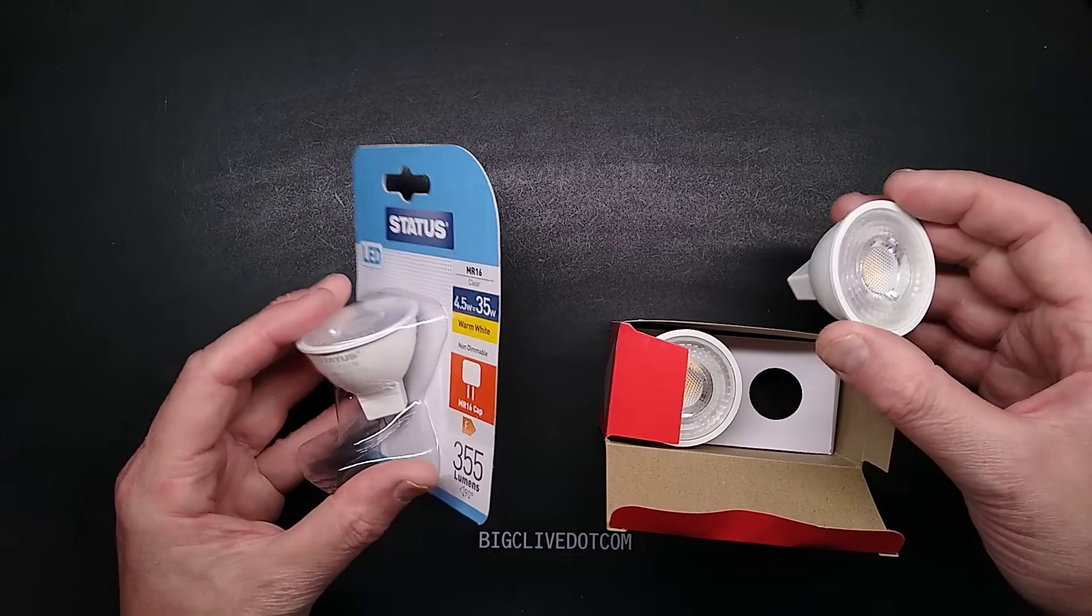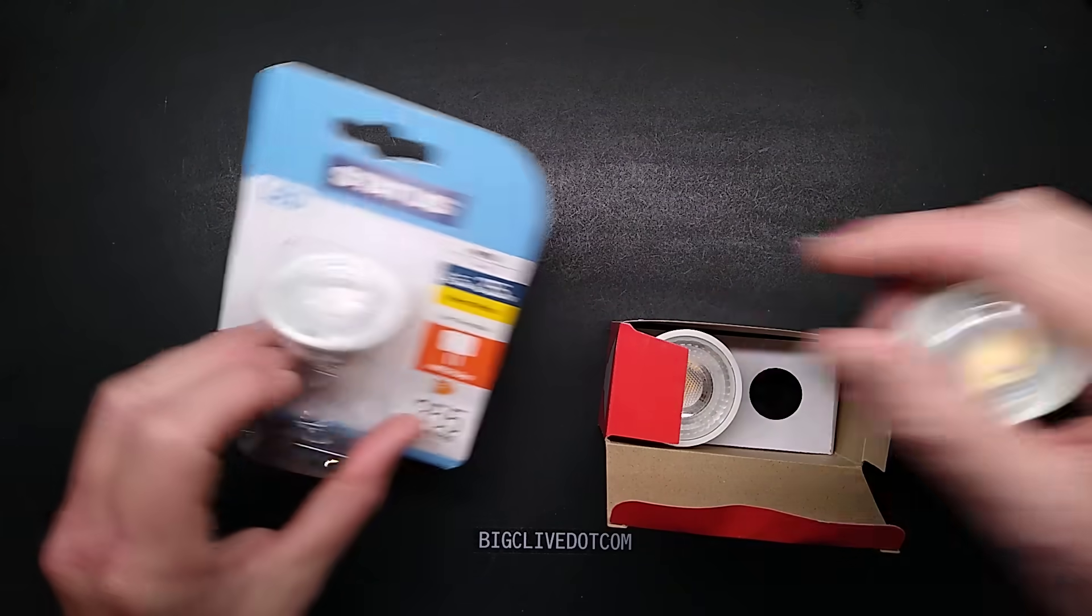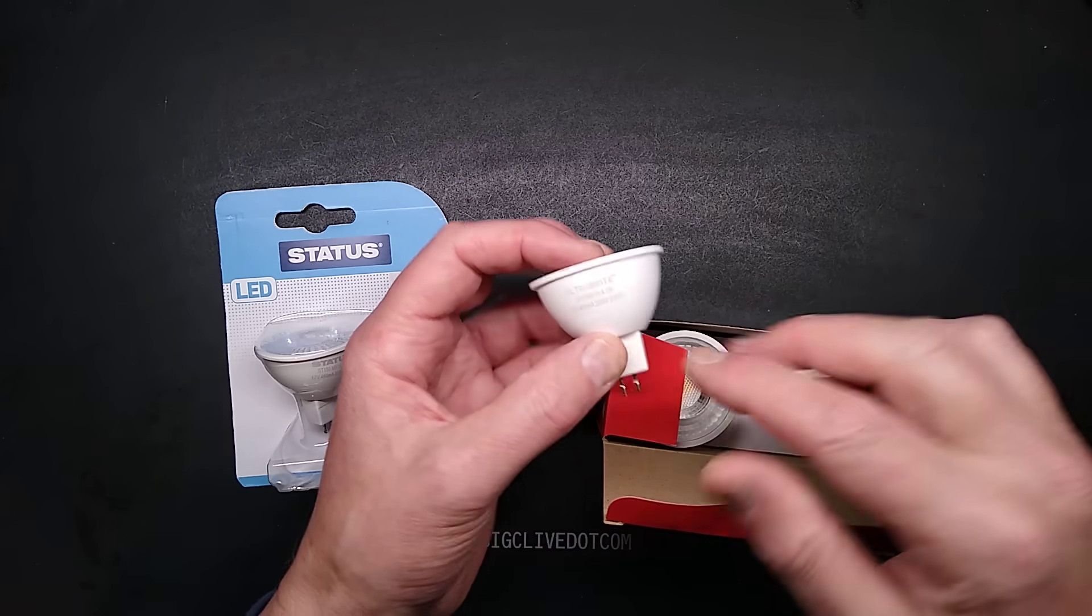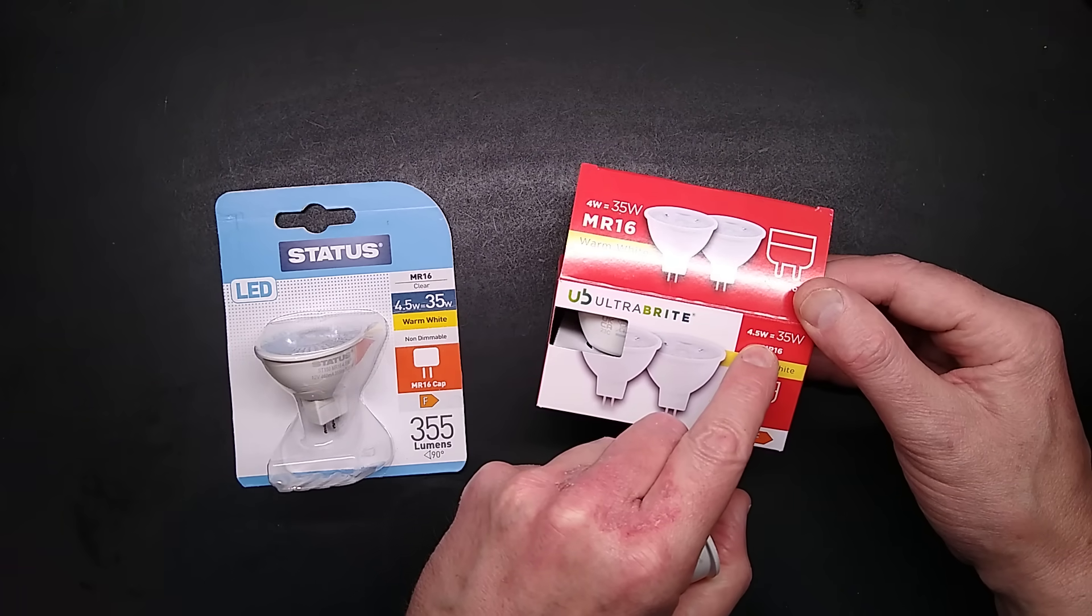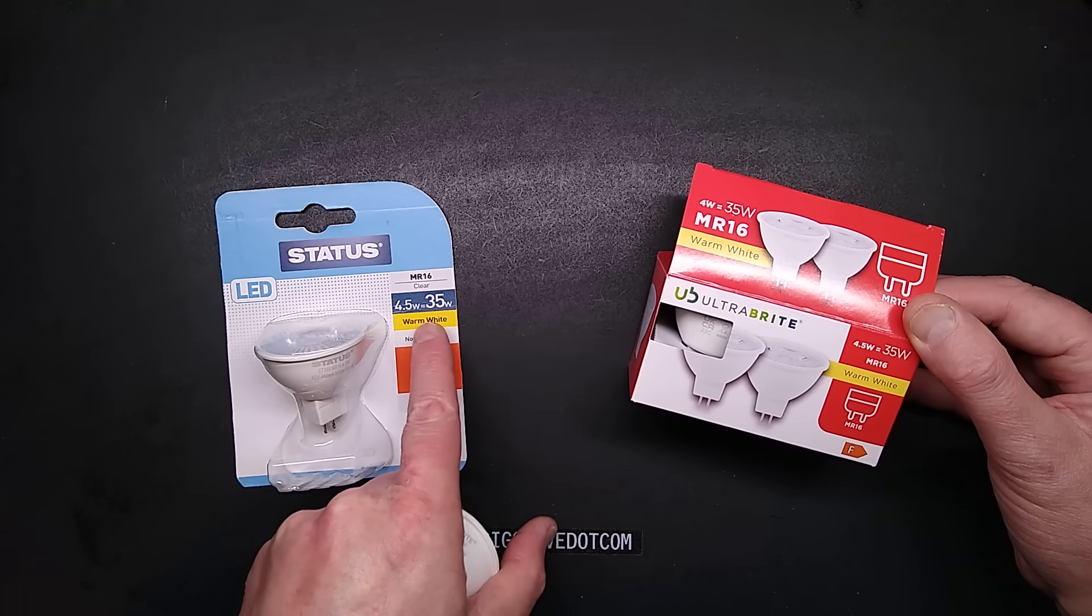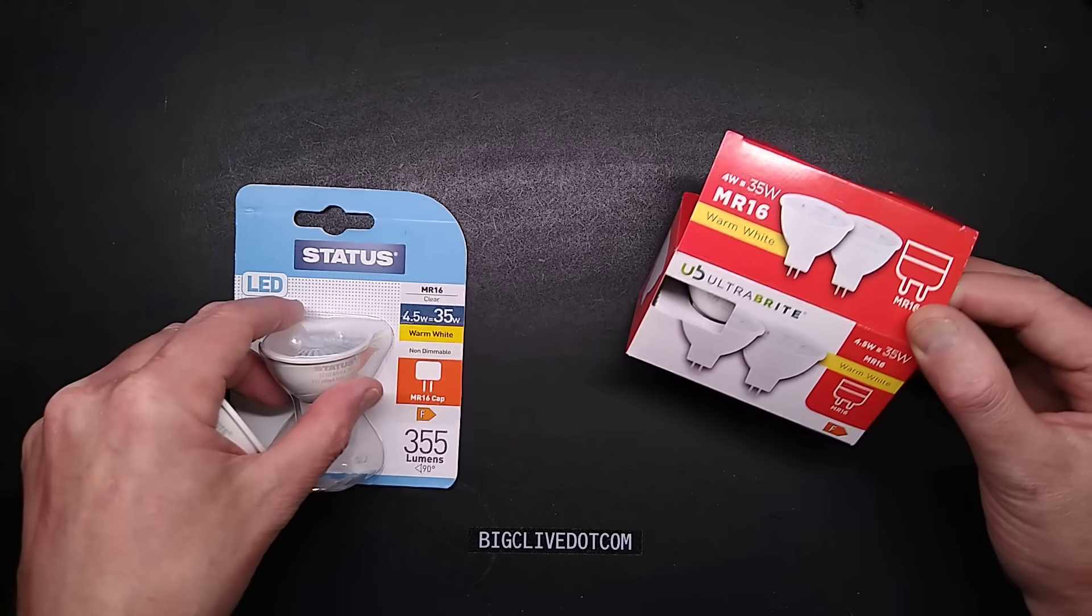We'll actually take a look at two, but we'll need to take a look at one because this Status one is exactly the same lamp as this twin pack Ultra Bright. They're both rated 4.5 watt equal to 35 watts. It is the same lamp.